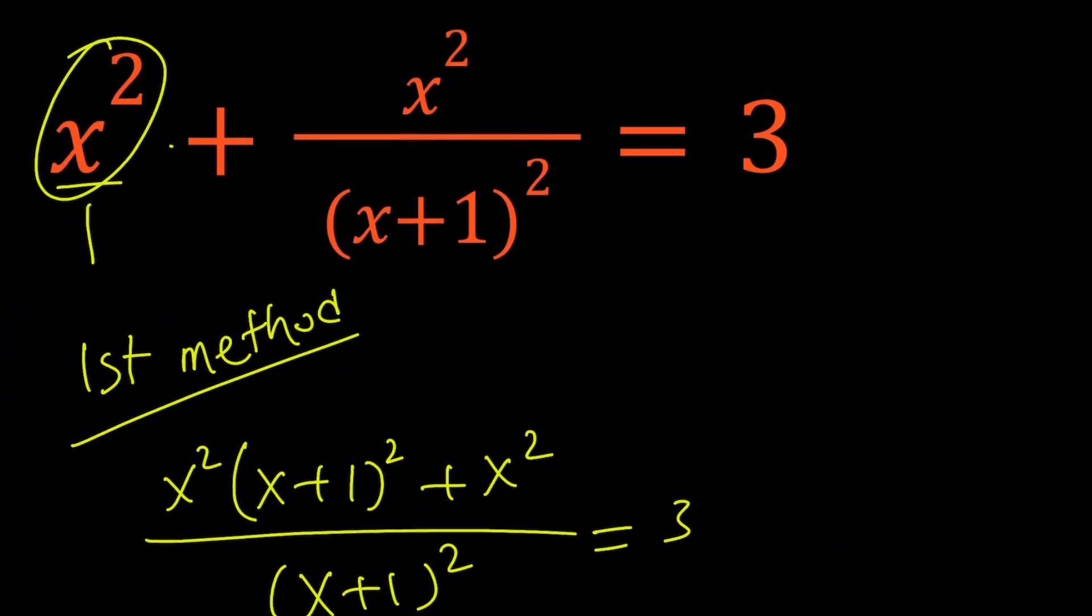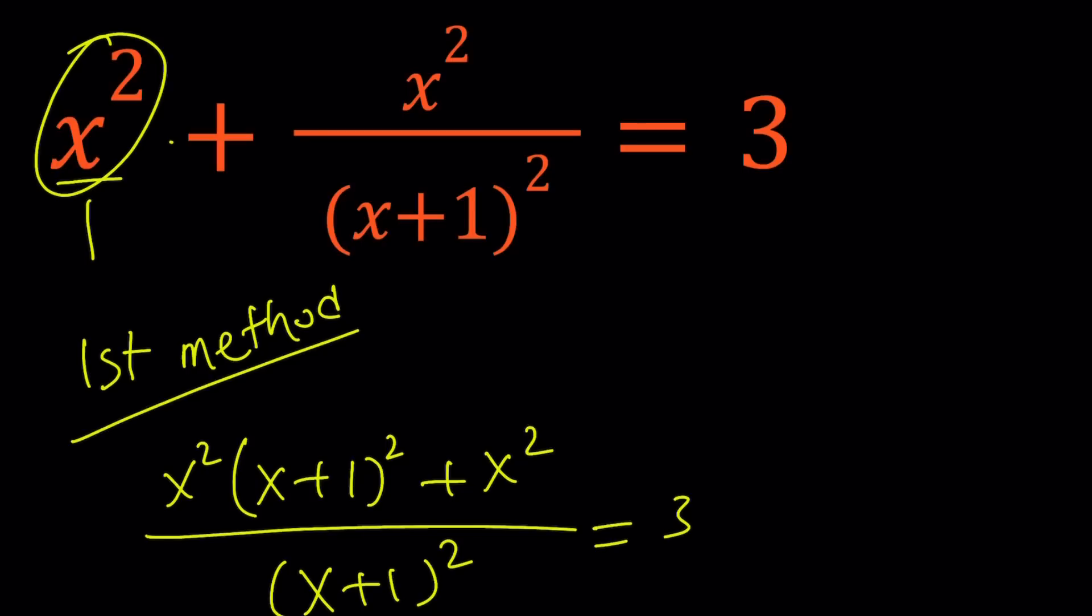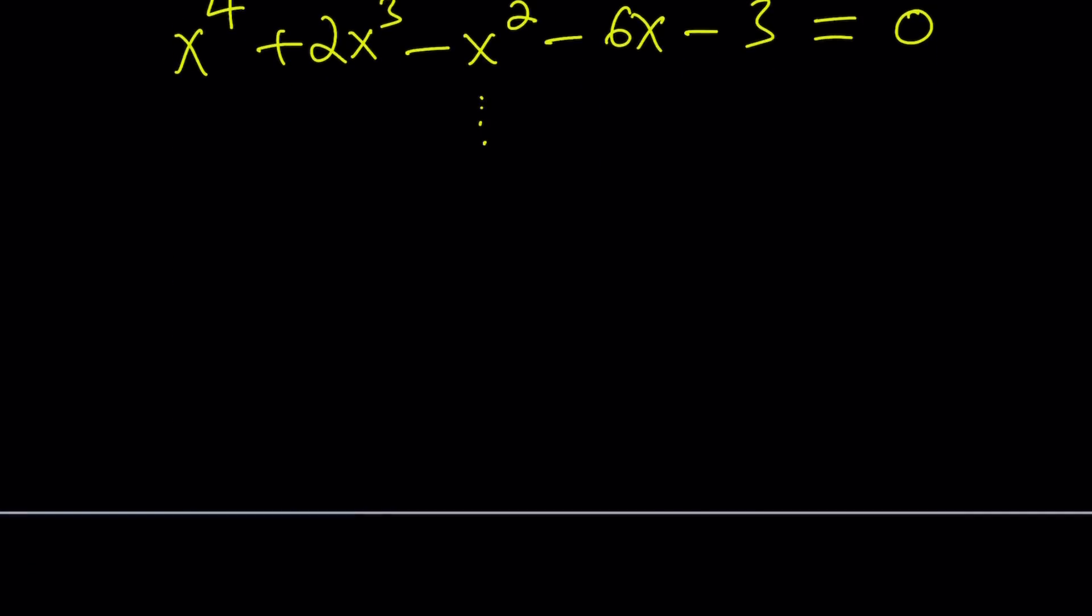When you look at this problem hopefully you noticed that there's something special about it, and that is both the numerator and the denominator are squared. So that means we can write it as a quotient squared. Second method. We have x squared plus x squared over x plus 1 squared equals 3.